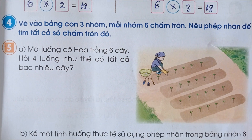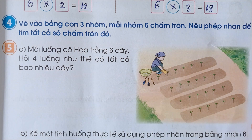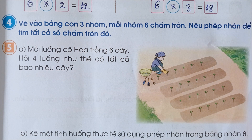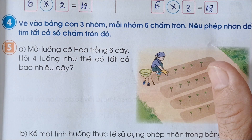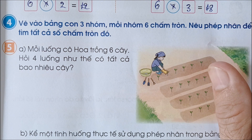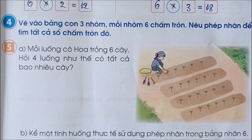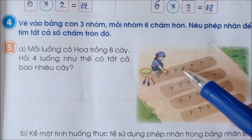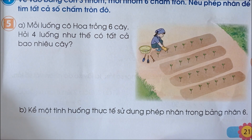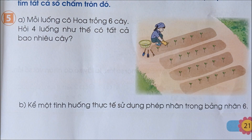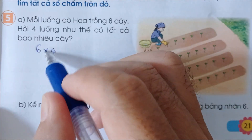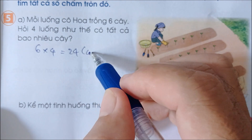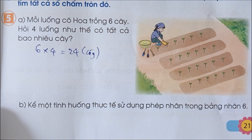Bài số 4: vẽ vào bảng. Có 3 nhóm, mỗi nhóm 6 chấm tròn, nêu phép nhân để tìm tất cả các số chấm tròn đó. Bài số 5: mỗi luống, cô hoa trồng 6 cây. Hỏi 4 luống như thế có tất cả bao nhiêu cây? 4 luống có tất cả là 6 x 4 bằng 24 cây. Đáp số: 24 cây.